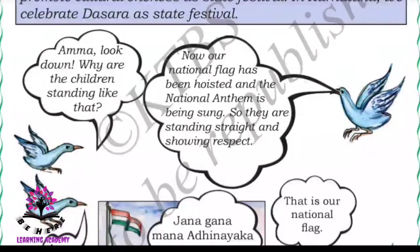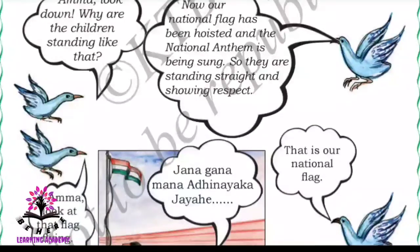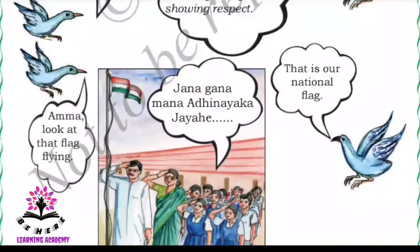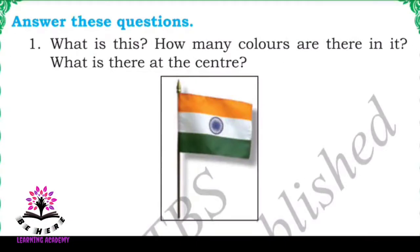'Amma, look down — why are the children standing like that?' 'The national flag has been hoisted and the national anthem is being sung, so they are standing straight and showing respect.' 'Amma, look at that — the flag is flying.' Children are singing Jana Gana Mana Adhinayaka Jaya Hai.